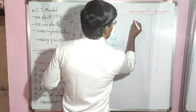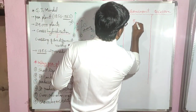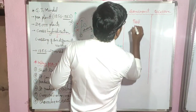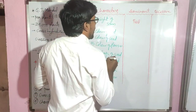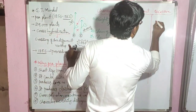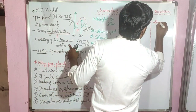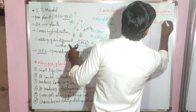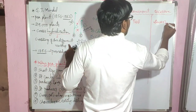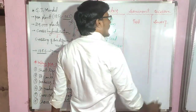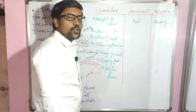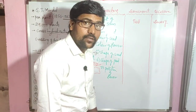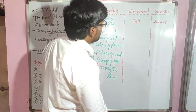For height of the stem: tall is the dominant form and dwarf is the recessive form.